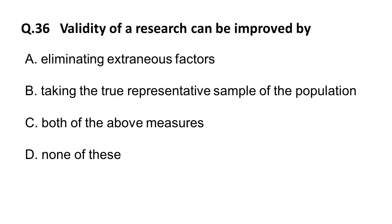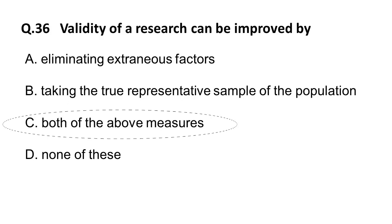The next question: validity of research can be improved by — option A is eliminating extraneous factors, option B is taking a true representative sample of the population. Both of these are correct. The correct answer is both A and B.